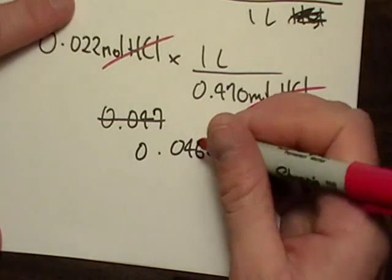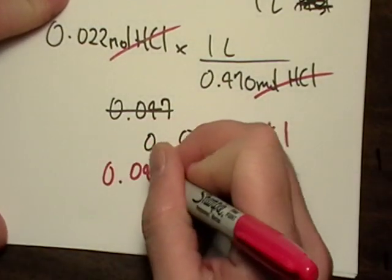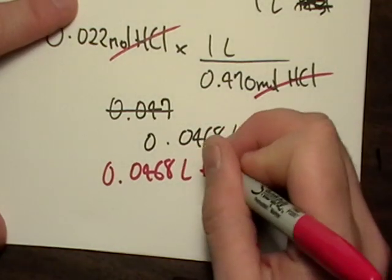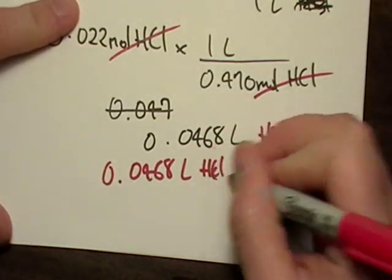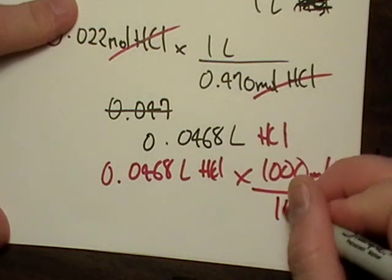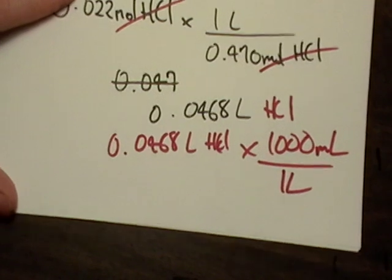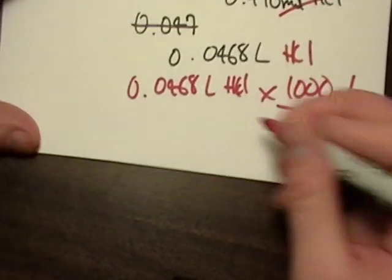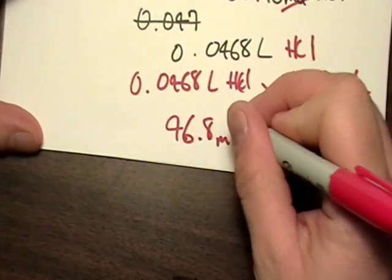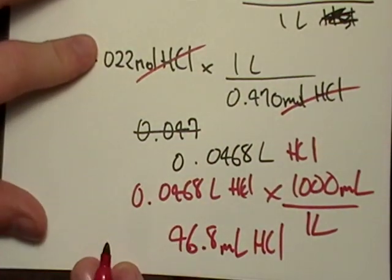That's going to equal 46.8 milliliters of HCl. That's what I'm going to use for this.